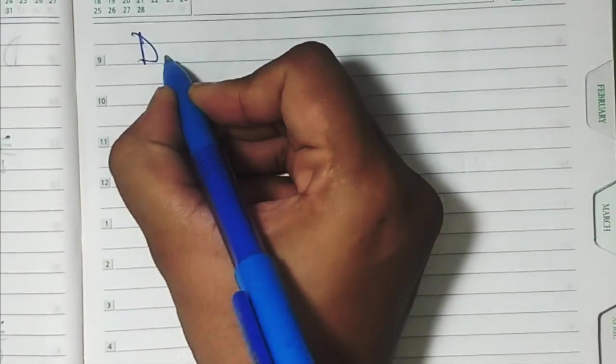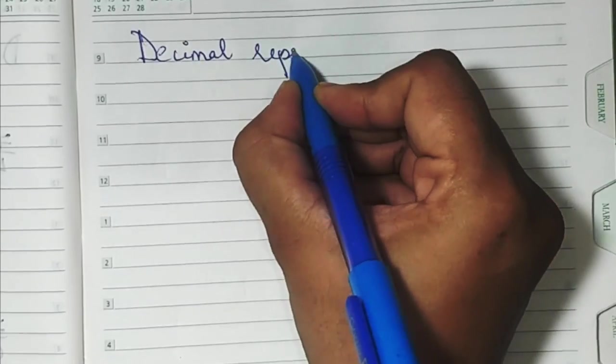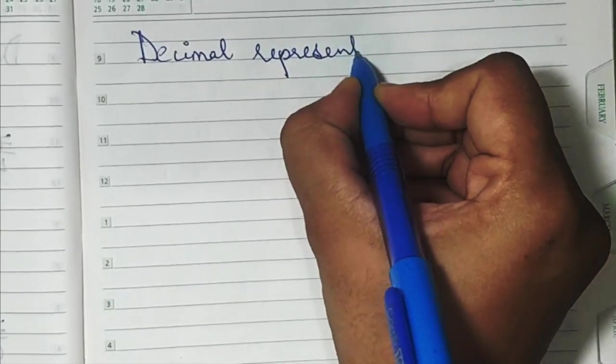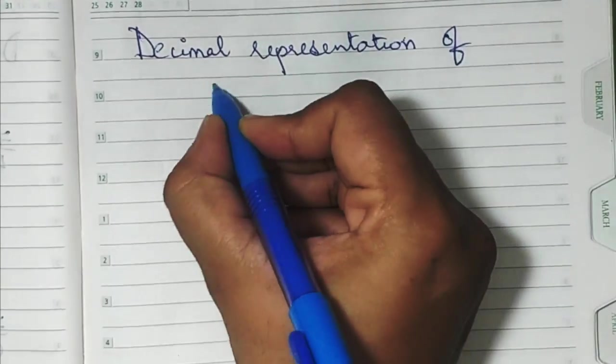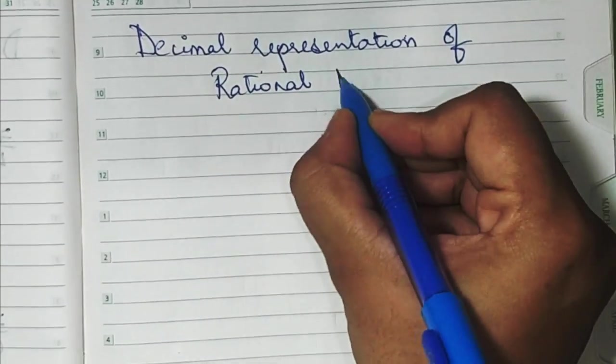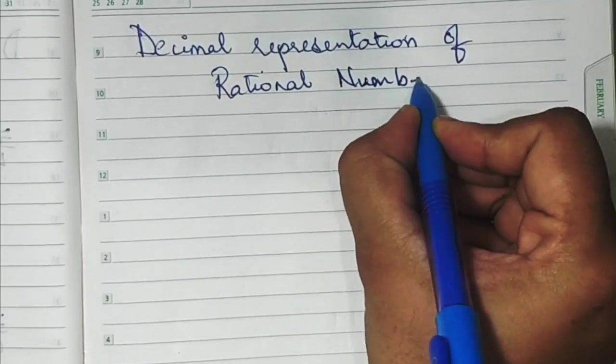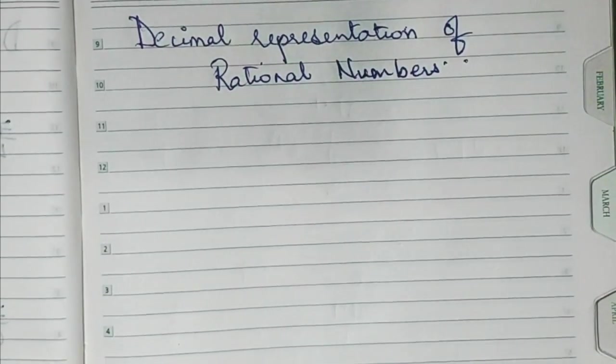Now we learn the decimal representation of rational numbers, so the decimal representation of rational numbers.